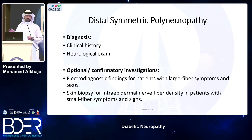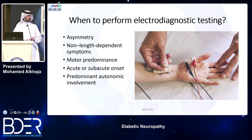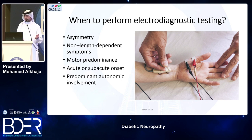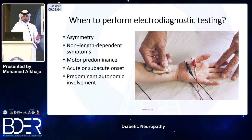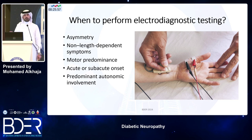Electrodiagnostic testing is ordered when symptoms are asymmetric — which may indicate mononeuritis multiplex or radiculopathy — when symptoms are non-length dependent, when there is motor predominance (since diabetic neuropathy begins with sensory symptoms), when onset is acute or subacute, or when there is predominant autonomic involvement.